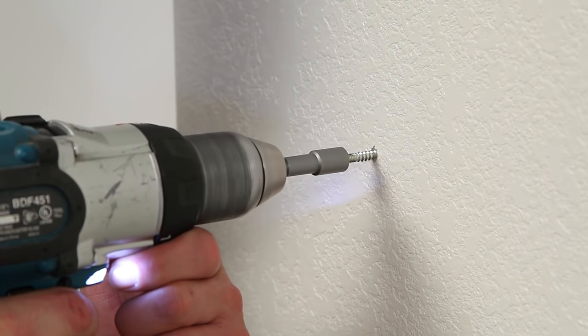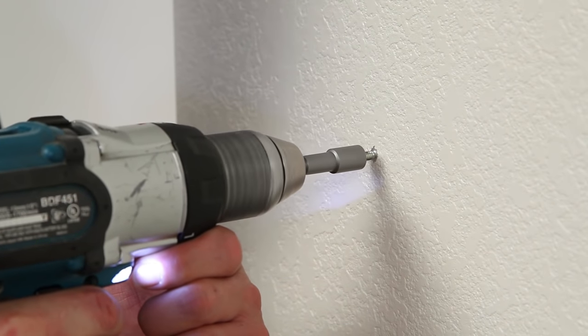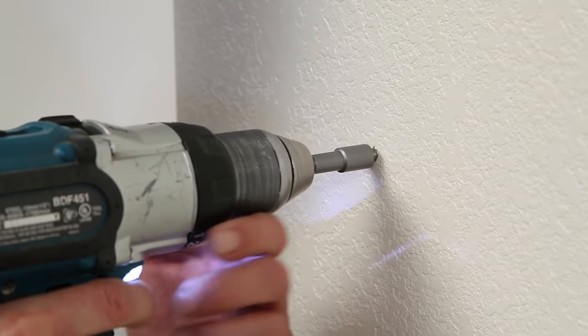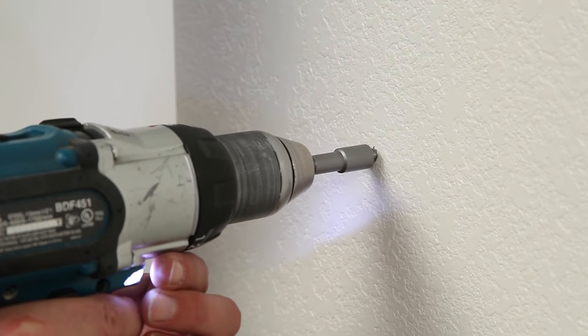Apply steady, even pressure to the anchor so it doesn't push through the wall or back out of the hole. Put your drill in reverse and back your tool off the stud.